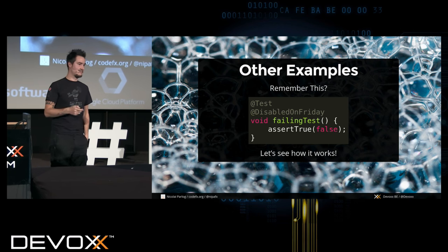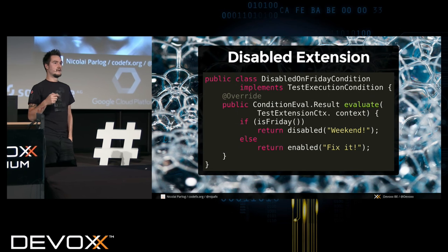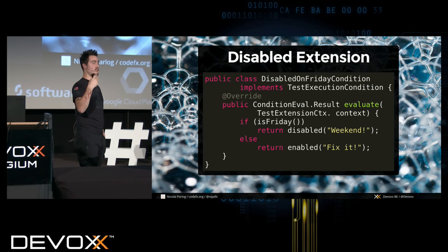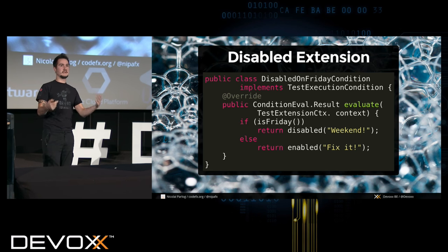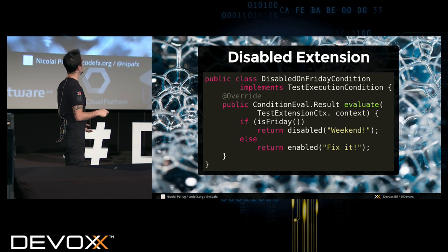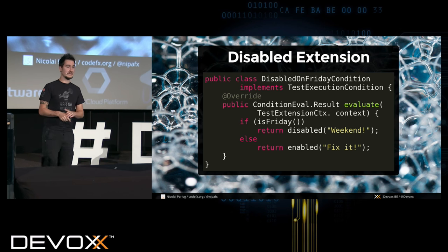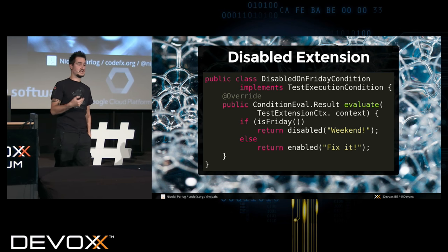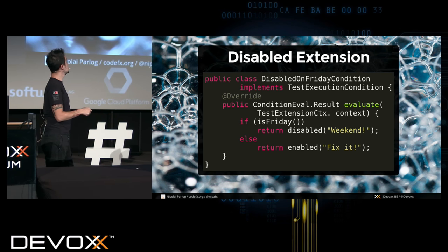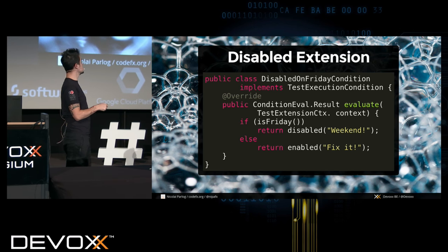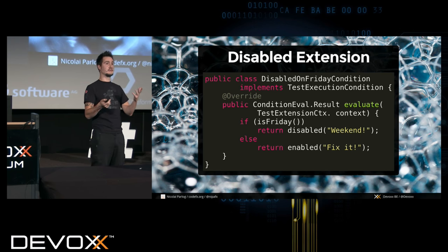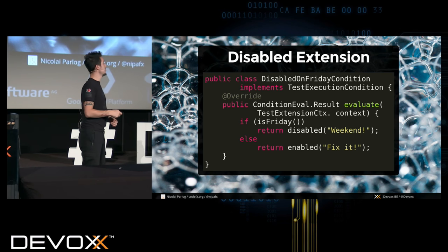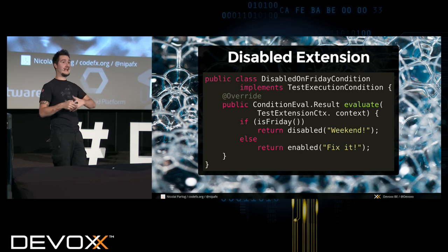To implement something that disables tests — like 'disabled on Friday' — there are two extension points: one for the whole container and one for individual tests. The TestExecutionCondition interface has an 'evaluate' method returning a ConditionEvaluationResult. You get the extension context, check whether it's Friday, and use static factory methods — 'disabled' or 'enabled' — on the result. If you return 'disabled,' JUnit 5 just won't run the test.